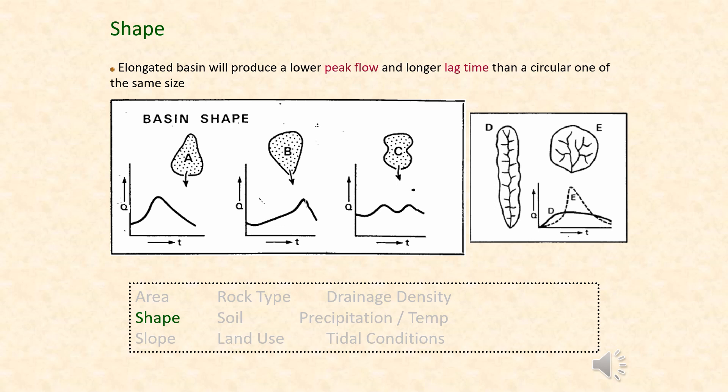The shape of the drainage basin plays a very important role in what the storm hydrograph looks like and how likely it is to flood. Basin shape A is likely to have a very flashy system with a very short lag time. Basin B tapers off at the end and can also have quite a high peak, but the high peak tends to occur much later, giving more warning to react to a potential flood.